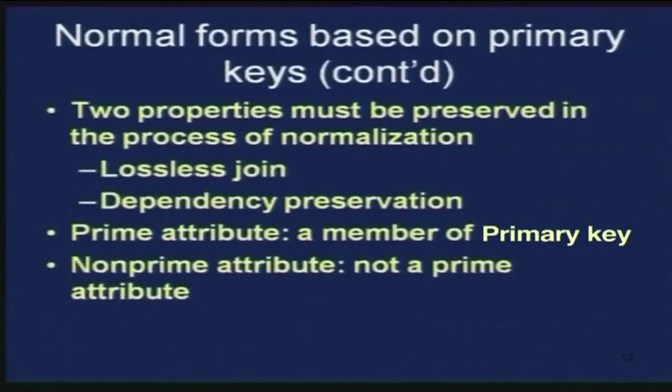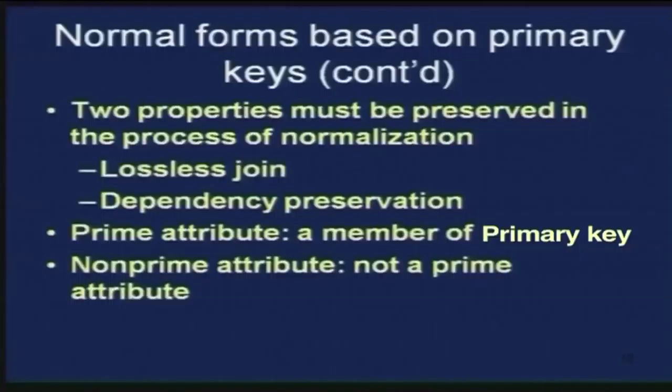Two properties must be preserved in the process of normalization: the lossless join property and the dependency preservation property. A prime attribute is a member of the primary key, and a non-prime attribute is not a prime attribute. We are not going to talk about normal forms in this lecture; we are only going to talk about normalization and the fundamental aspect — functional dependency.